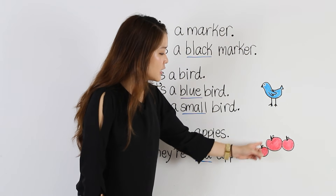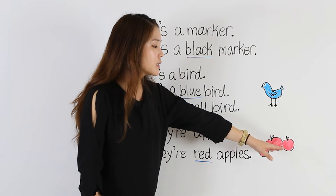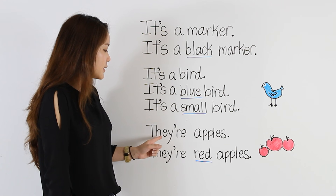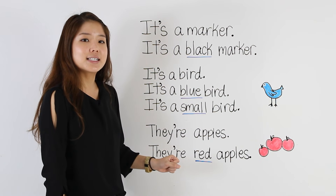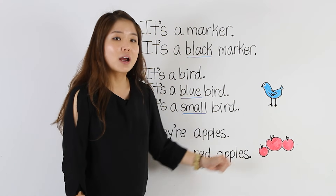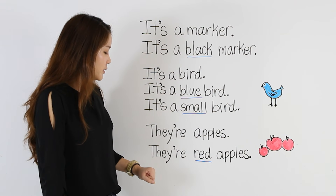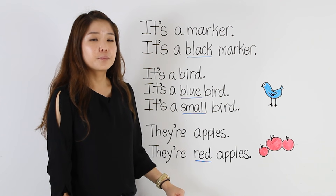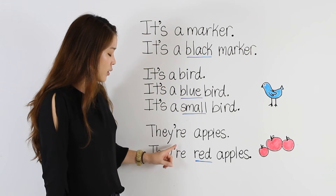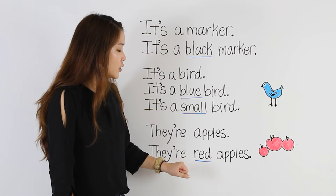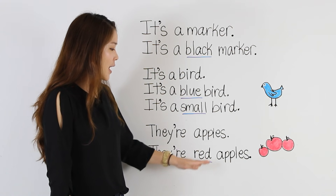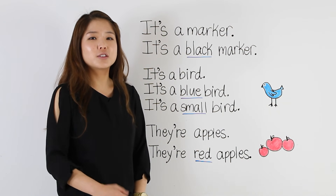Now at the last part, we have some apples — three apples. Remember, when we have more than one noun, it's called a plural noun. So we have to say, they're apples with an S. I want to use the adjective red to describe the color of these apples, so I'm going to say, they're red apples. Here there's no article, there's no 'a', because there's more than one. They're red apples — I just have to put the adjective before the noun that it's describing.